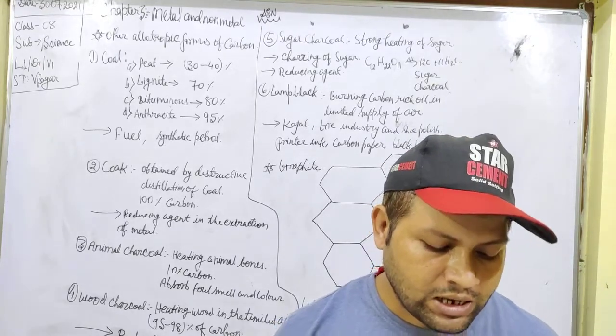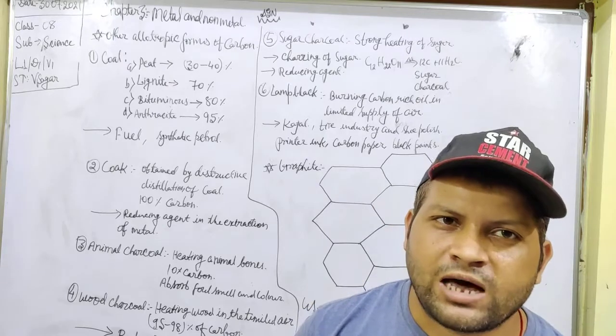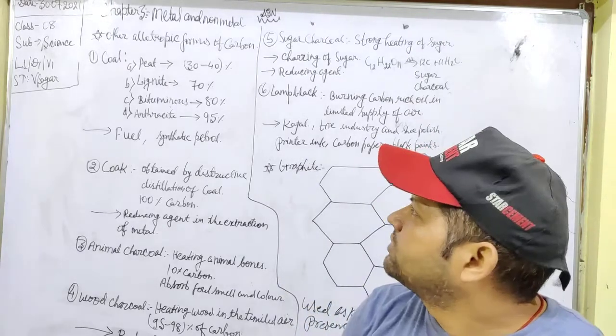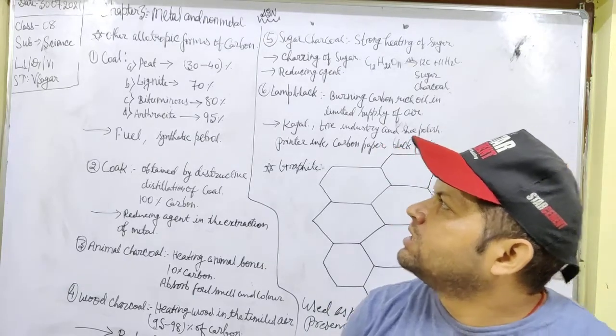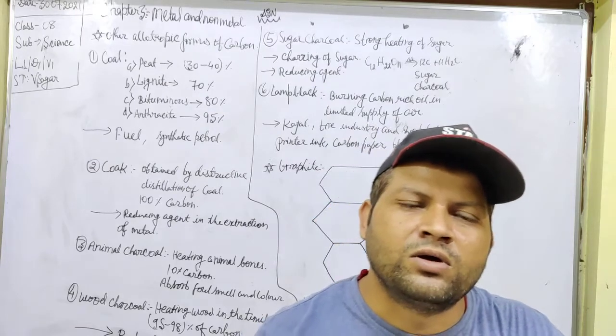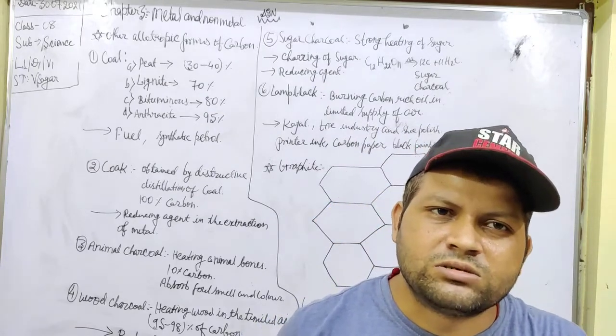In this lecture, I am going to discuss other allotropic forms of carbon rather than graphite and diamonds. So, please concentrate on the video, here I have discussed different types of allotropic forms of carbon. So, first of all...